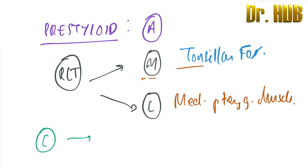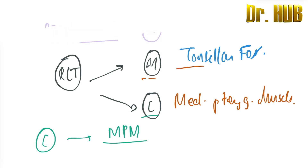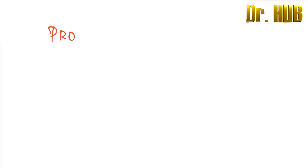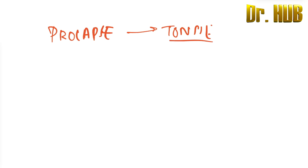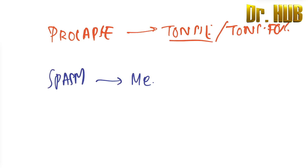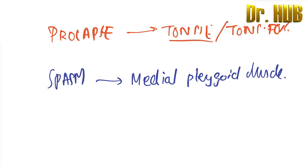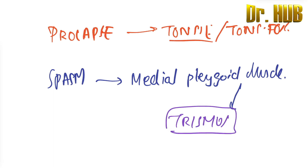The content of the pre-styloid is the medial pterygoid muscle, as we saw from the lateral relation. Clinically, the presentation includes prolapse of the tonsil from the tonsillar fossa, and spasm of the medial pterygoid muscle leading to trismus.